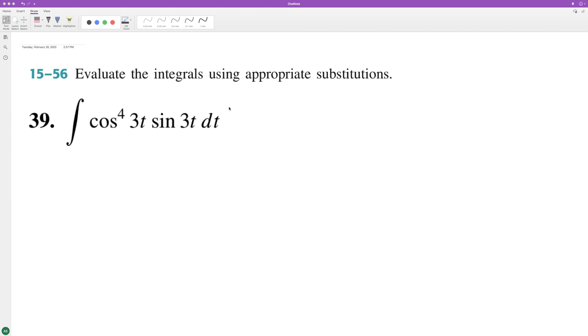So what we'll do here is we'll do u substitution. We're going to set u equal to cosine 3t, and du in this instance is going to be equal to negative 3 sine 3t.